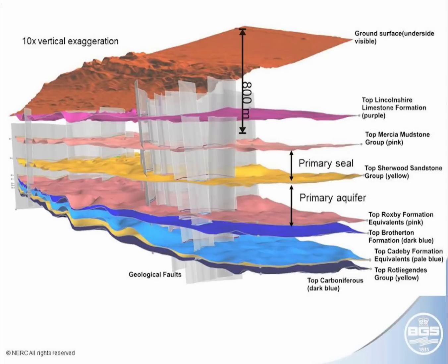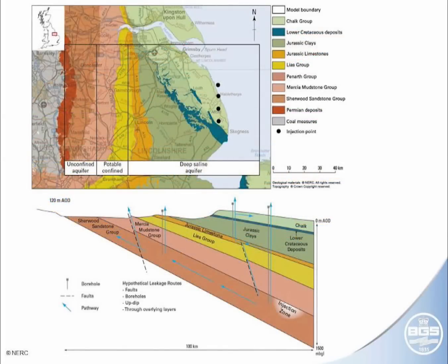On screen you're seeing the layering from another set of geological models. We want to inject the CO₂ into the primary aquifer — the Permo-Triassic sandstone — and keep it in place using the primary seal, which is the Mercia Mudstone Group overlying it. We're using the results from colleagues' geological modelling to help us understand what's going on.